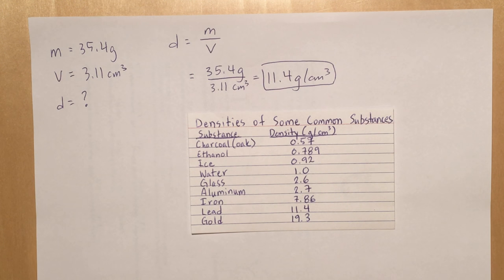It'll help if you remember the density equation: density equals mass divided by volume. Then you just plug in those variables, the numbers that you have for those variables. So 35.4 grams divided by 3.11 centimeters cubed.